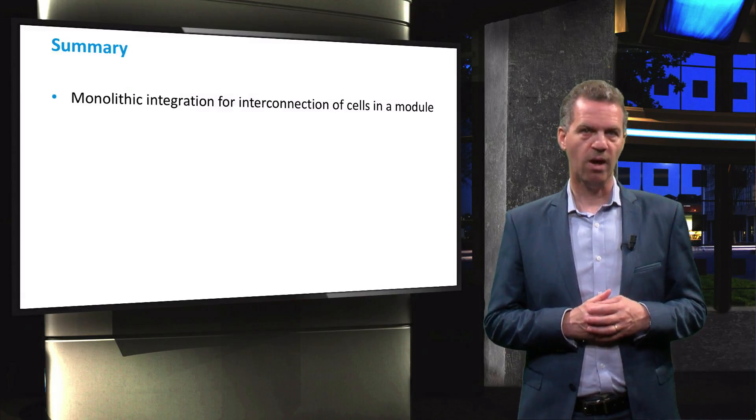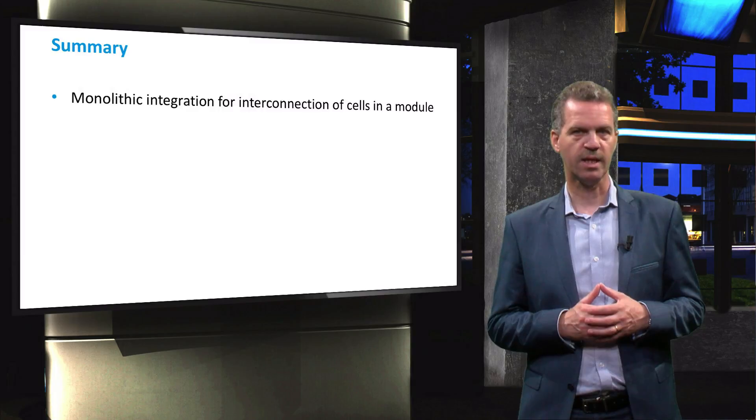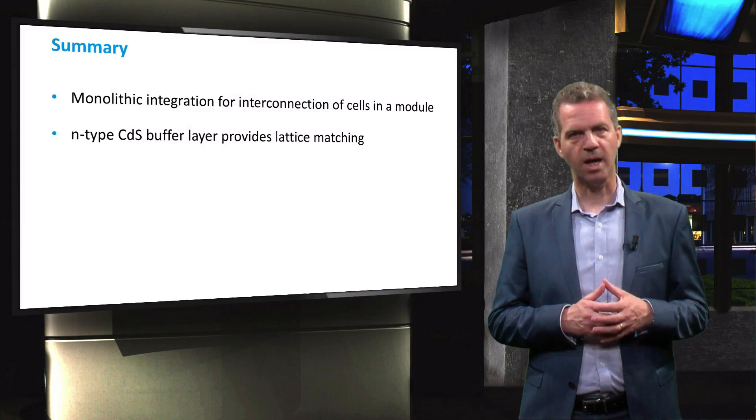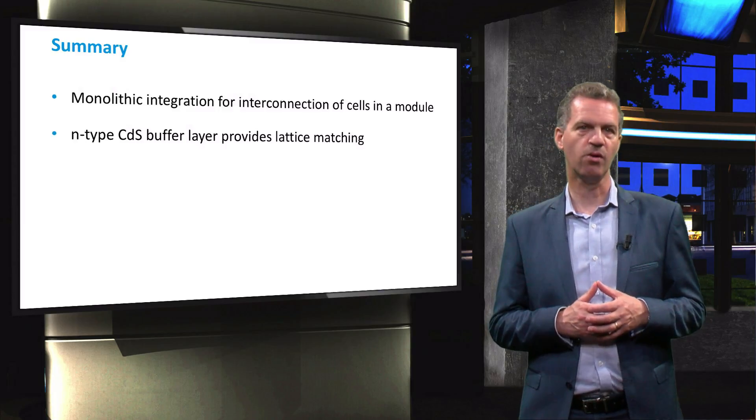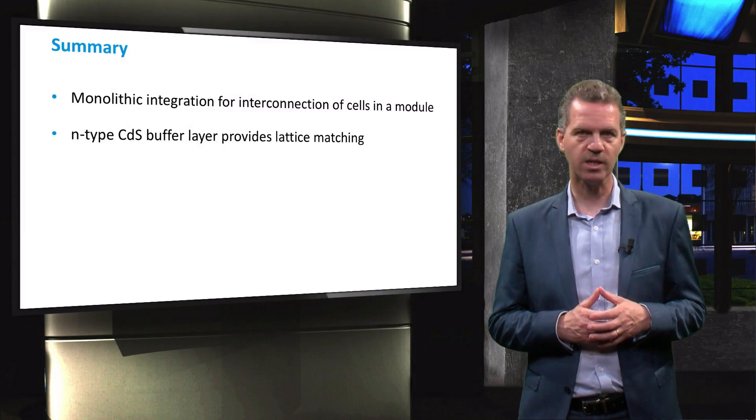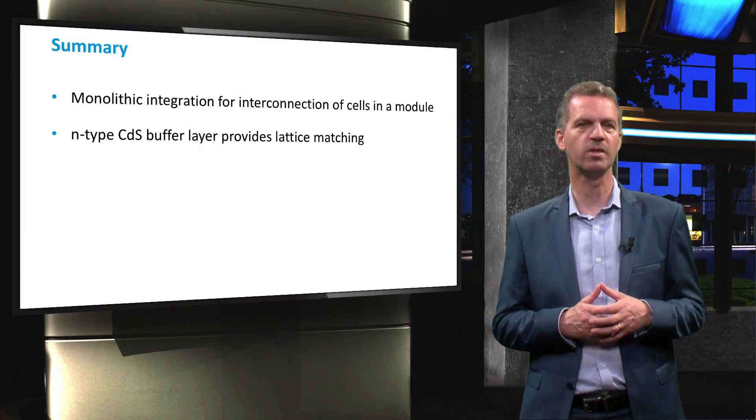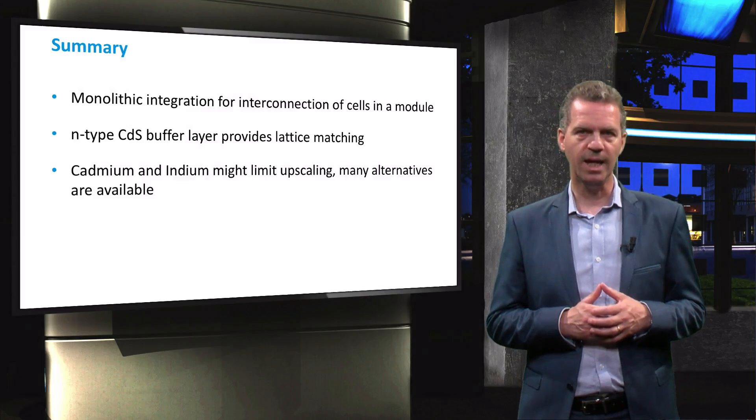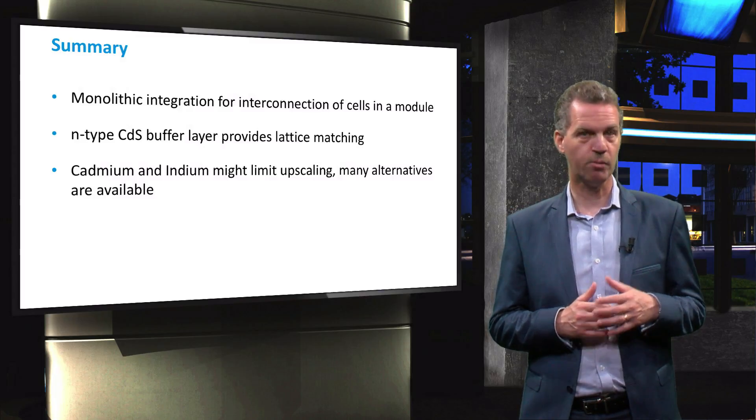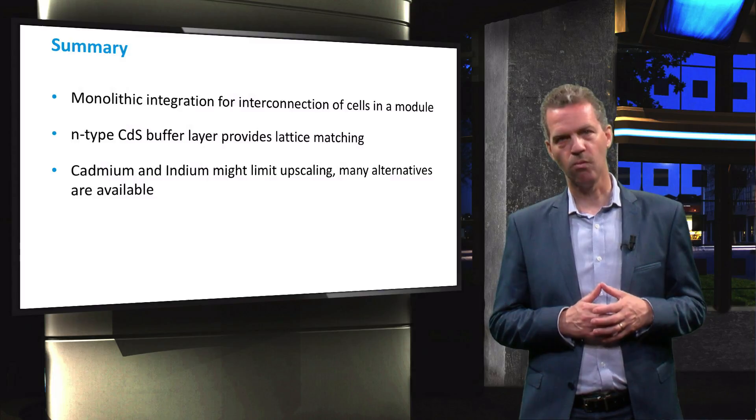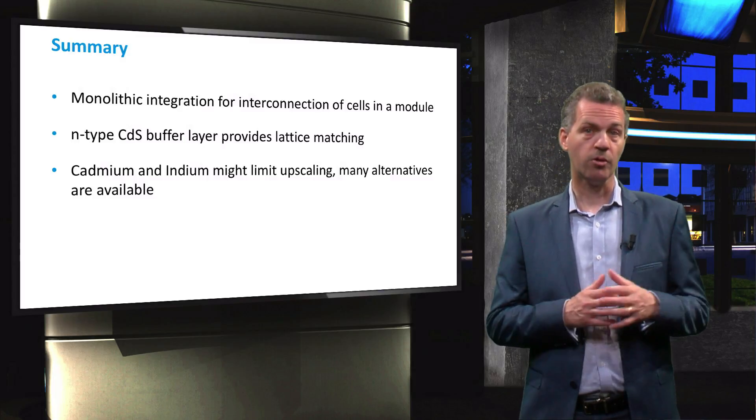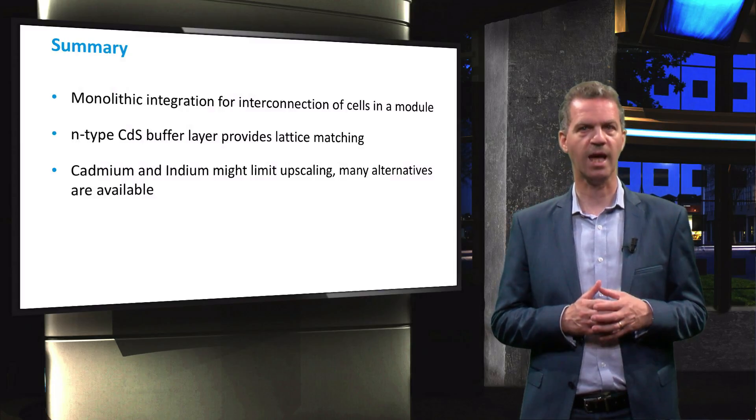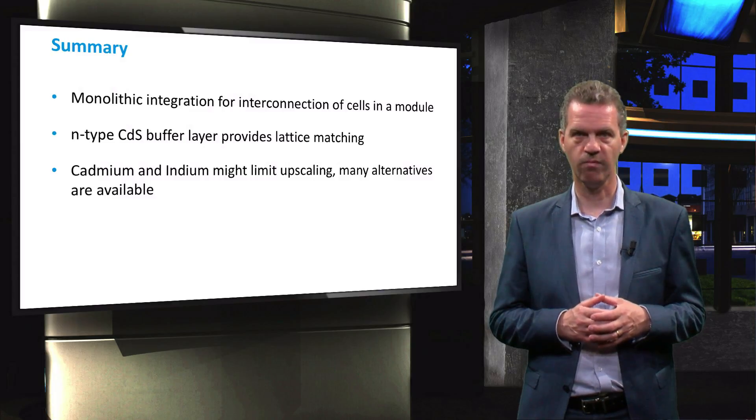To summarize this video, we have discussed that thin-film CIGS solar cells can be interconnected by monolithic integration. The N-type cadmium sulfide buffer layer is placed in between the front TCO and the absorber layer to provide lattice matching as well as to create a heterojunction with the P-type CIGS layer. Finally, we have discussed that the elements cadmium and indium may limit further progress, either by the perceived toxicity of the cadmium or by the relatively low abundance of indium. Many alternative materials are available, such as cadmium-free alternative CIGS solar cells and castorites, which are also indium-free.